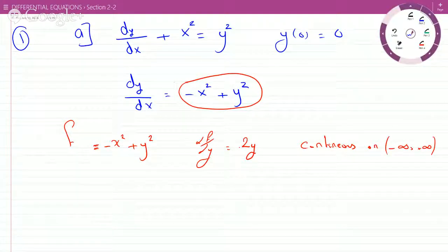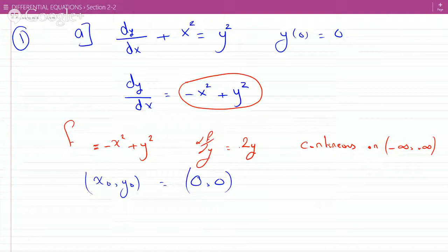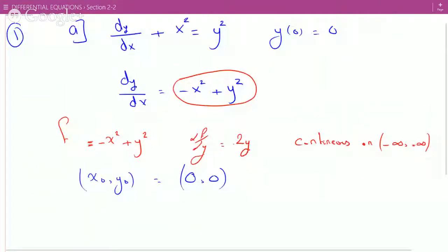So the existence and uniqueness theorem says, so here it's asking, does it guarantee a unique solution? Well, since (0, 0), so here your x₀, y₀ is equal to (0, 0), and this is continuous on the domain, then yes, the existence and uniqueness theorem guarantees...